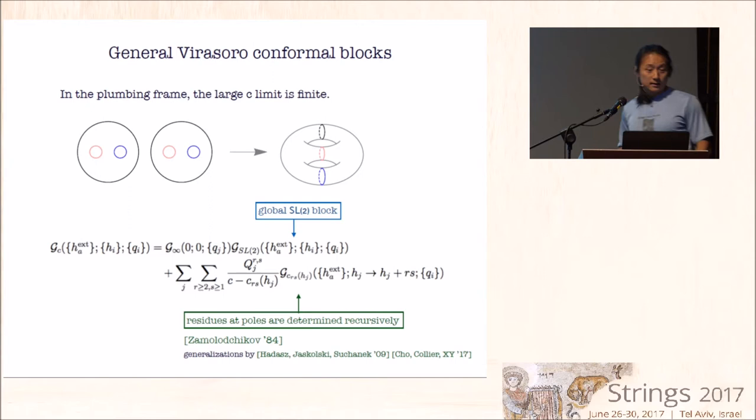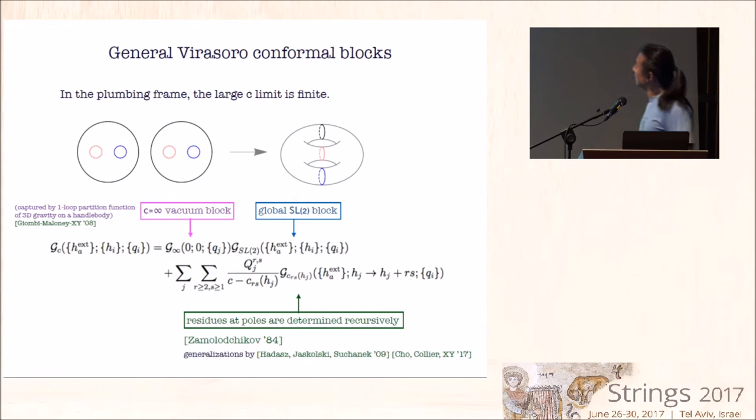This recursion formula is derived by considering analytic continuation in the central charge C. There are some pole terms whose residues are recursively determined by a conformal block with shifted internal weights with some known coefficients. These are due to Zamolodchikov back in 1984 and was generalized later. The behavior at large C for the plumbing frame - there's a piece that is a global SL2 block that is expected. If you're working with sphere conformal blocks, that's all there is. But going to higher genus, there's actually a non-trivial factor here, which is the infinite central charge limit of vacuum block. And rather unexpectedly, there's actually a general formula that was known due to my work with Simone Giombi and Alex Maloney some years back, where we studied one loop partition function of 3D gravity on the handlebody. And that's actually the same expression.